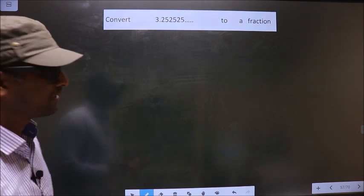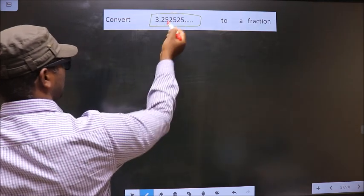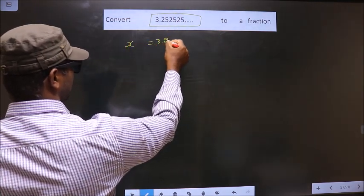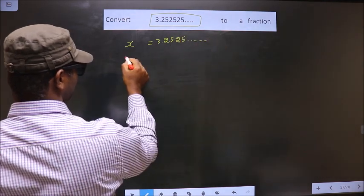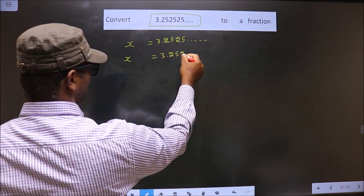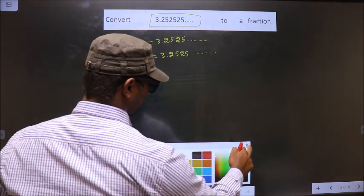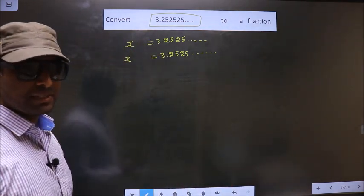First, whatever we have to convert, take that to be x. So x equals 3.2525 and so on. Now you should check how many numbers are being repeated. Here 25, 25, 25 and so on - two numbers are being repeated.